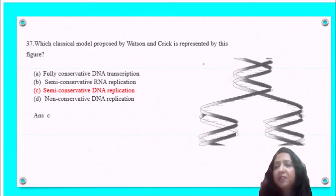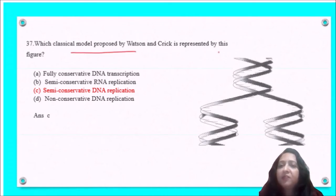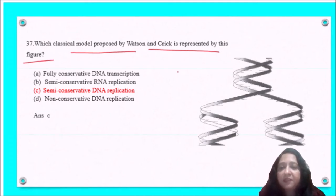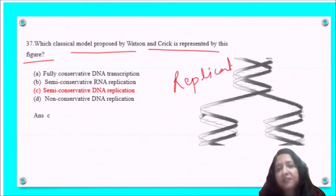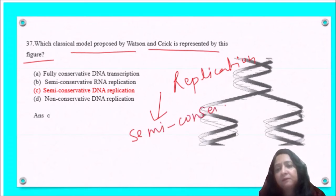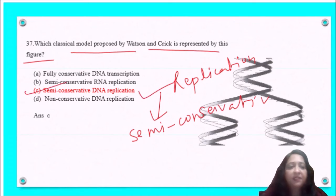Next question: which classical model proposed by Watson and Crick is represented by the figure shown? The figure represents DNA replication, and we know that replication is semi-conservative. So this figure represents semi-conservative DNA replication.